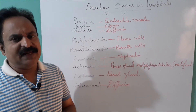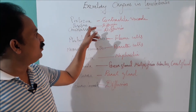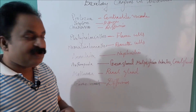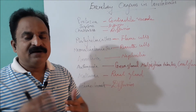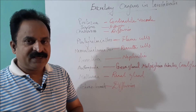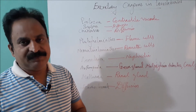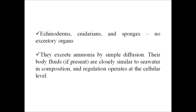In each and every phylum, there are different excretory organs. For example, the phylum Porifera, Cnidaria, and Echinodermata have no excretory organs present, because the nitrogenous waste produced is ammonia, which will directly diffuse into the aquatic medium. Among invertebrates, echinoderms, cnidarians, and sponges have no excretory organs — they excrete ammonia by simple diffusion.